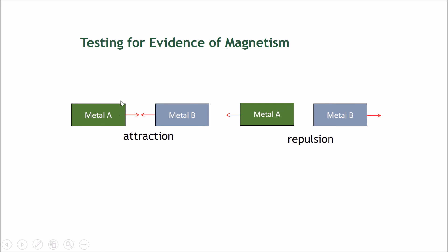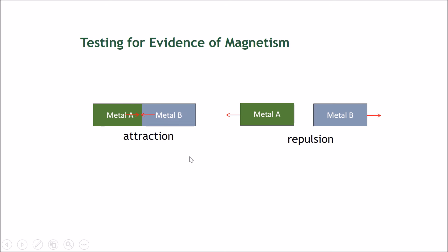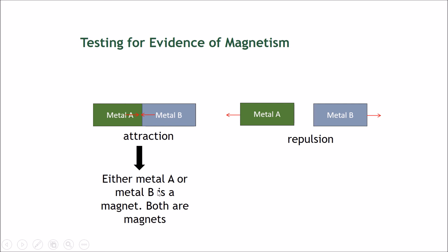Let's test for evidence of magnetism with a practice example. There is metal A and metal B, and there is attraction between these two. What could we conclude from this experiment? We could conclude that either metal A or metal B is a magnet, or both of them are magnets.